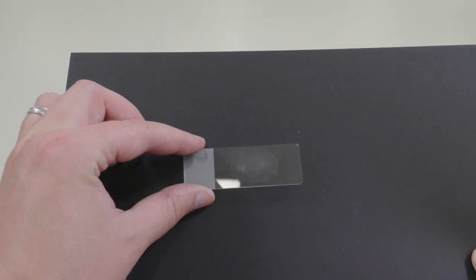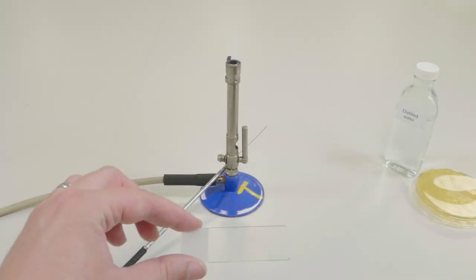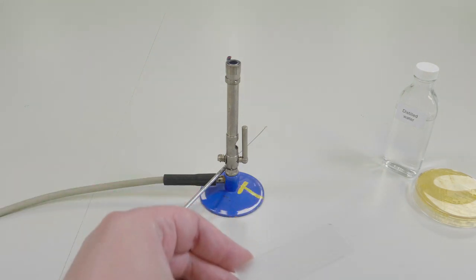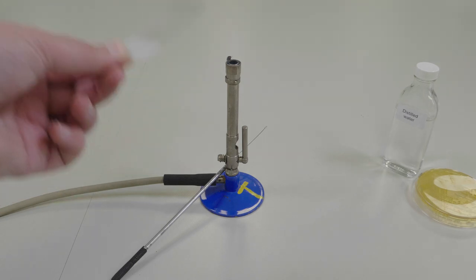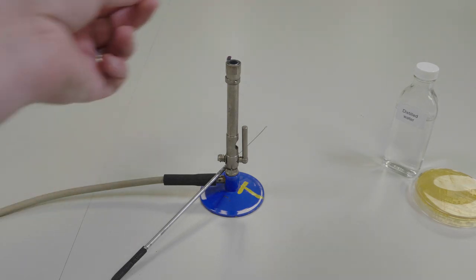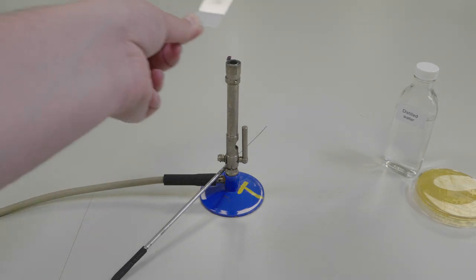Now you can see that all of the water has evaporated from my slide, so now I need to heat fix my film. This causes the bacteria to stick to the glass and prevents them from being washed away in the gram staining process.